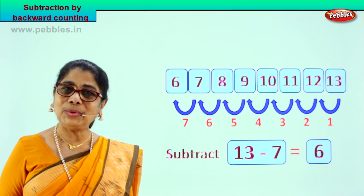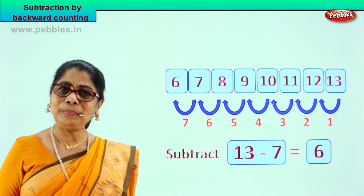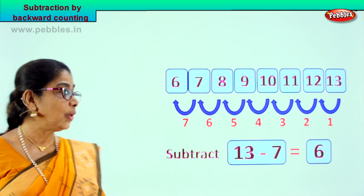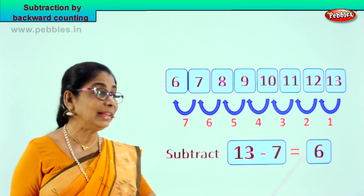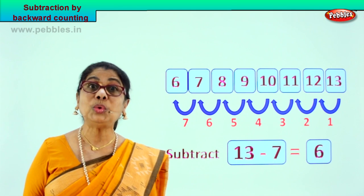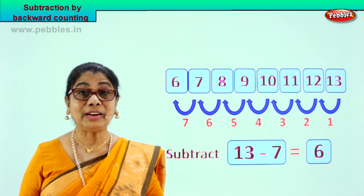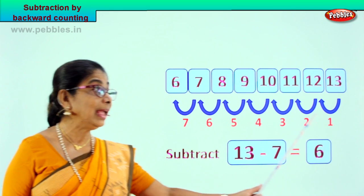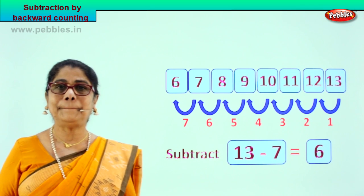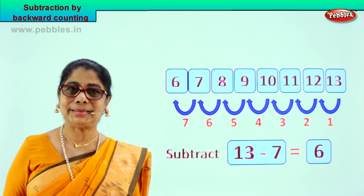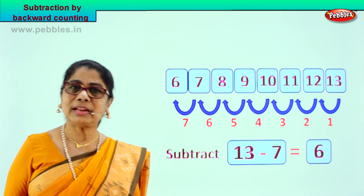Did you like the problem? Did you enjoy? Good. 13 minus 7 is equal to 6. What is the method we are following? Counting backward in subtraction. Good.